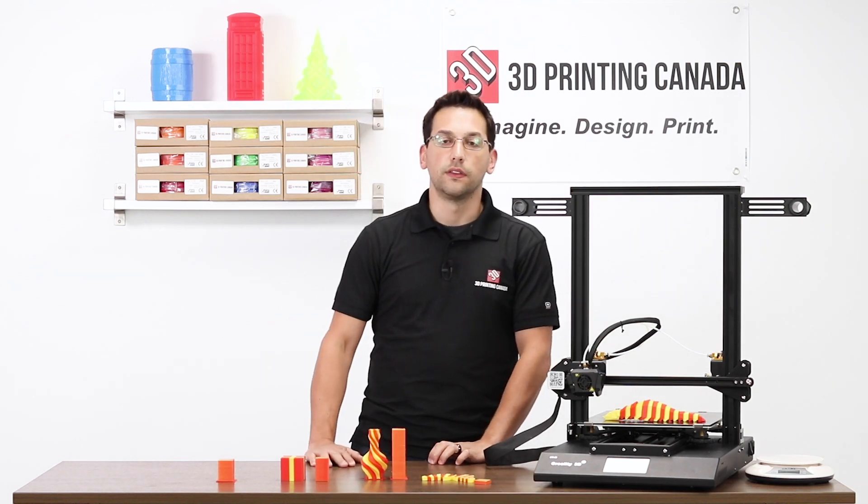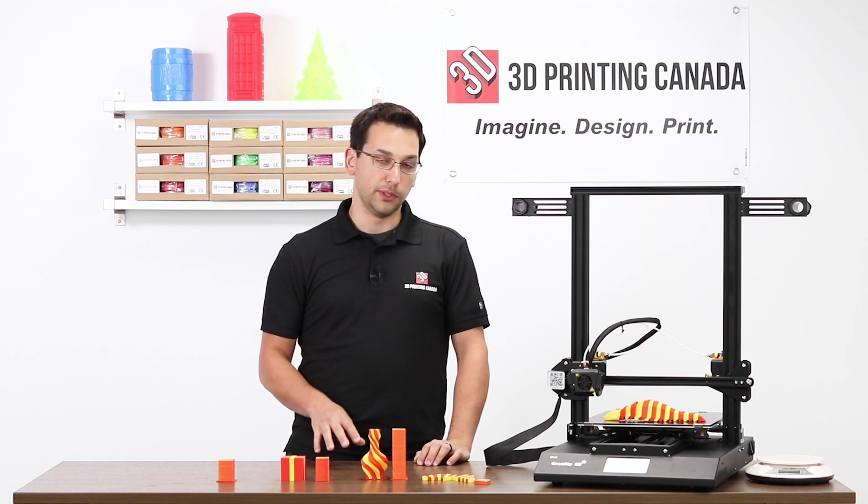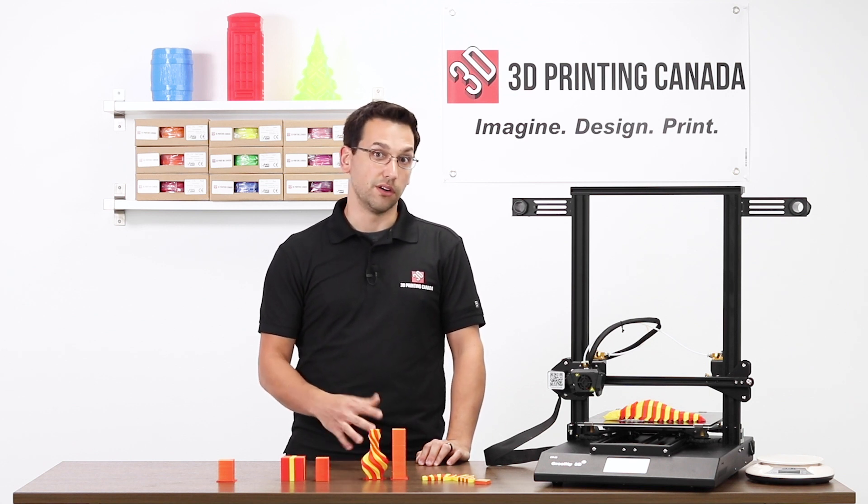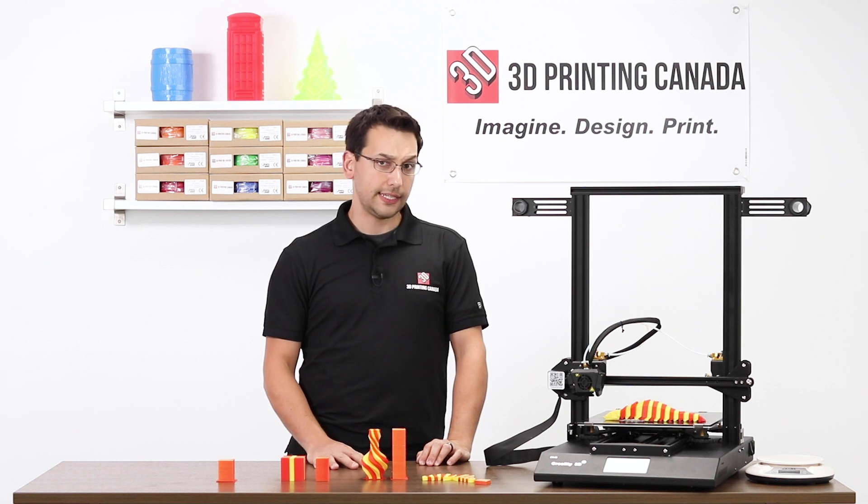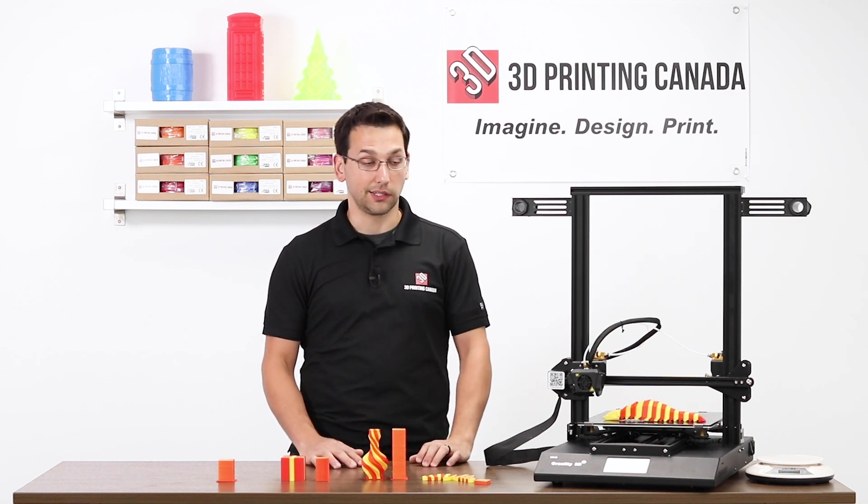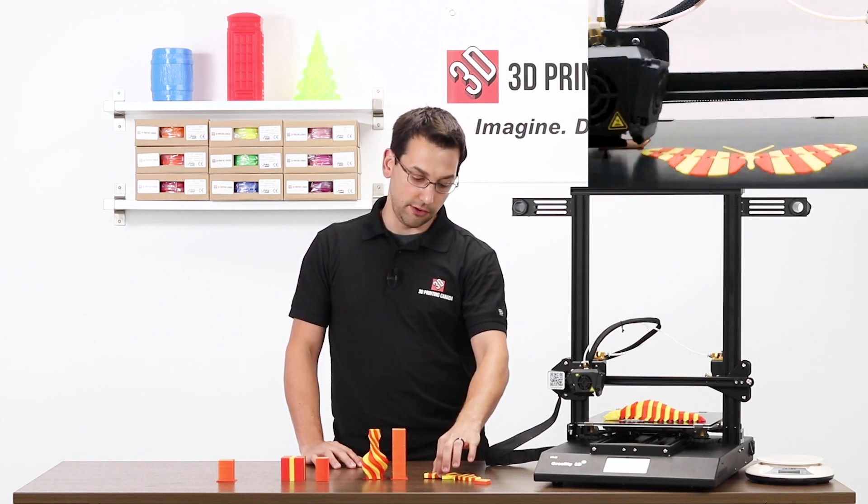In one of the initial videos on the CR-X, I was describing how I was having difficulty with bed adhesion. It was suggested in the comments that I up the bed temperature to 70 or even slightly above. I did that and it helped a little bit, but I still ended up needing glue stick. I'm not exactly sure what the problem was. But on this first print, I had no issues at all with bed adhesion.